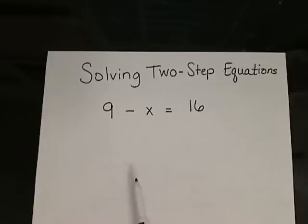Solving two-step equations involves two operations that we must undo in order to isolate the variable. So let's look and see what's happening to the variable.